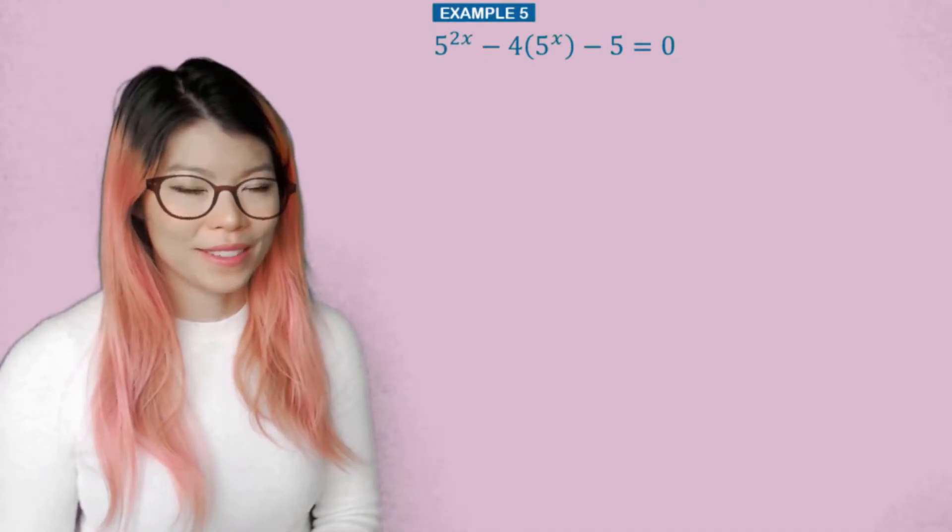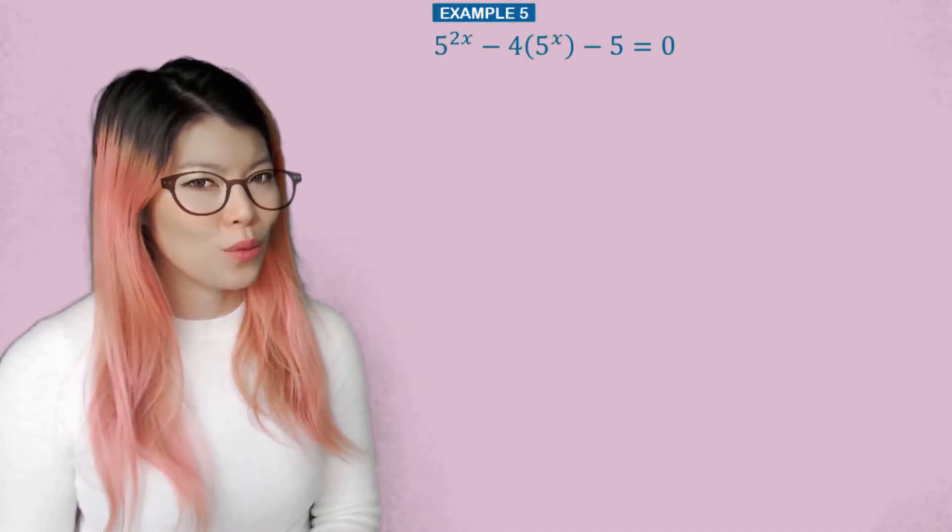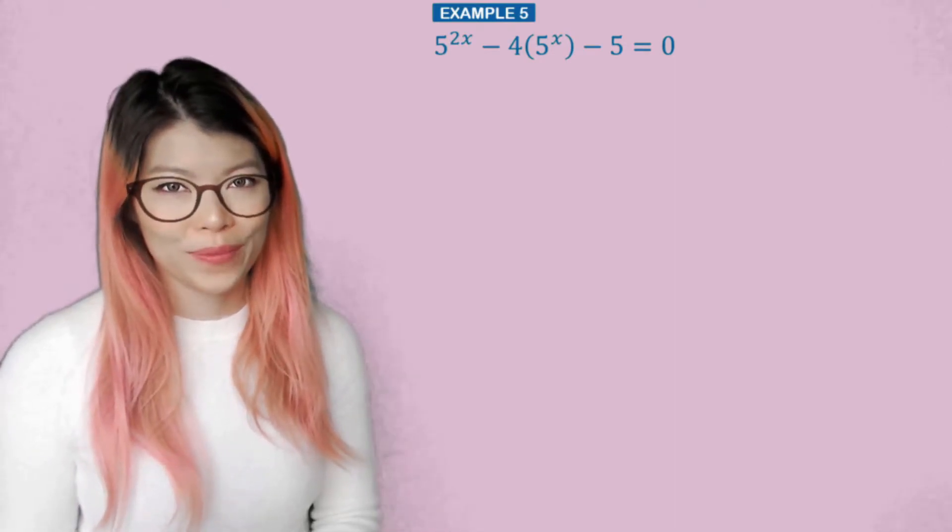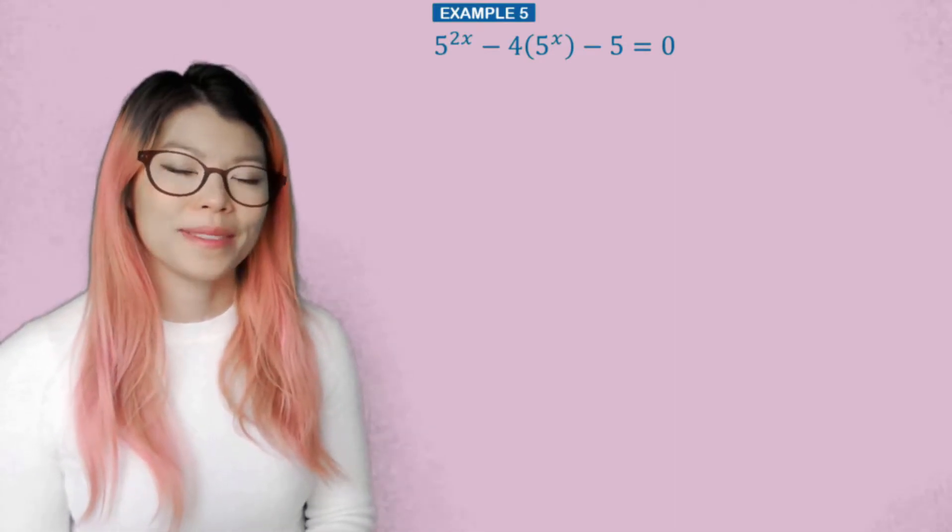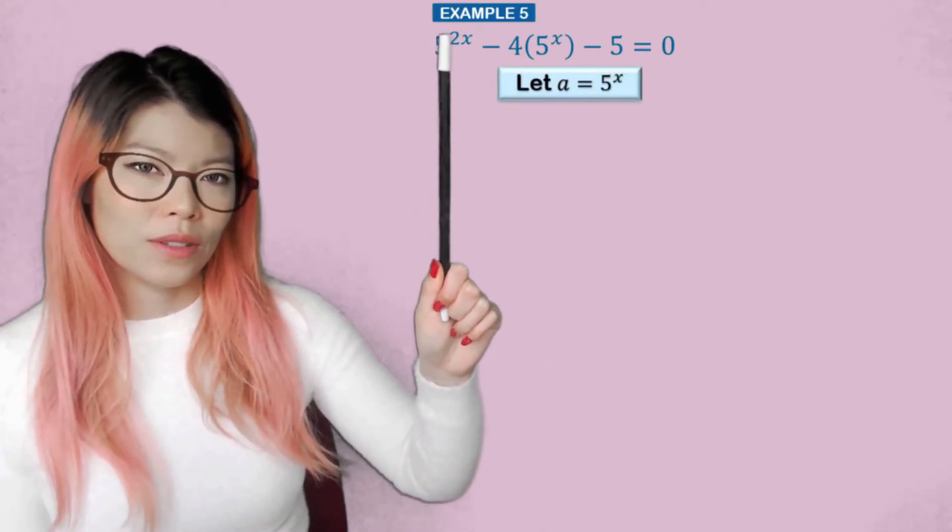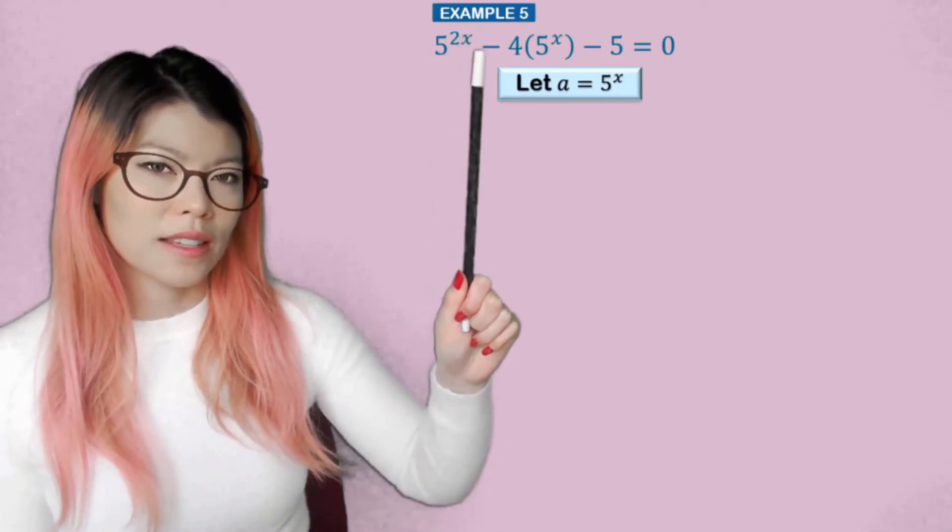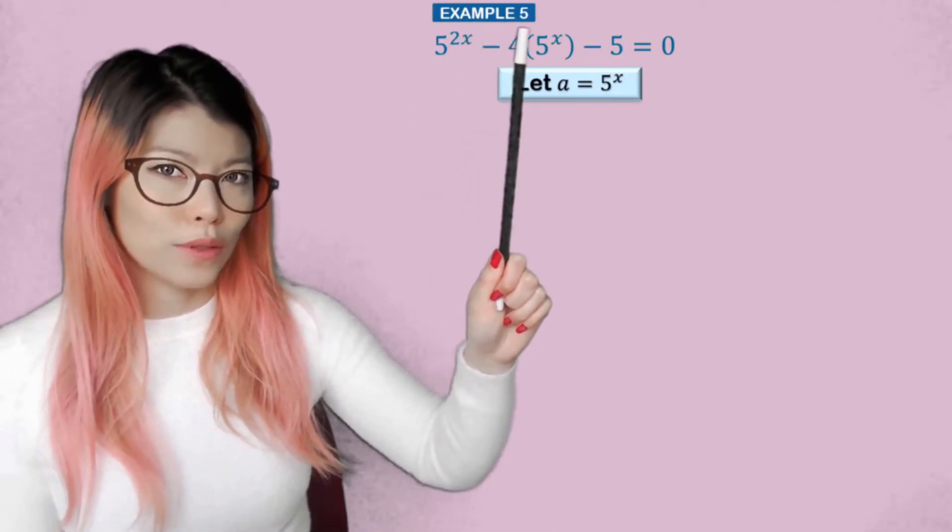Example 5. This one is quite tricky. But if you look at it for a little while, can you guess what we have to do? You can pause and have a little think about it. So you notice that there's a 5^x here and a 5^(2x) there. 5^(2x) can be written as (5^x)^2.